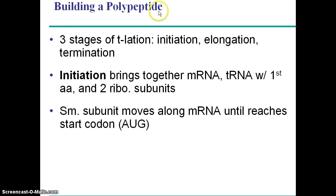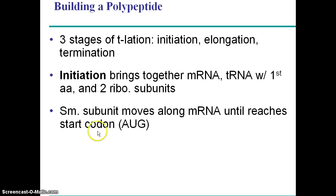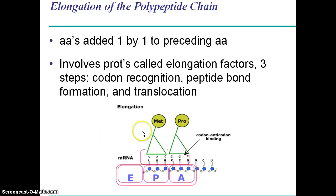Making this polypeptide that will eventually fold into a protein occurs in three stages: initiation, elongation, and termination. The whole idea of initiation is you start the process — you link up a tRNA with a ribosome, then the mRNA attaches like a little ribbon that moves in, and then the large subunit attaches. When you reach the start codon, you're off and running. The amino acids get added one at a time to the existing chain.